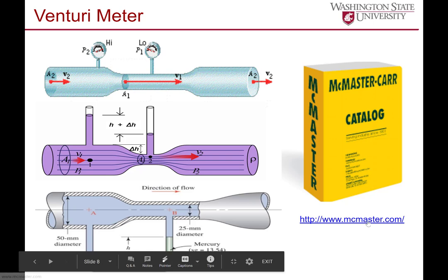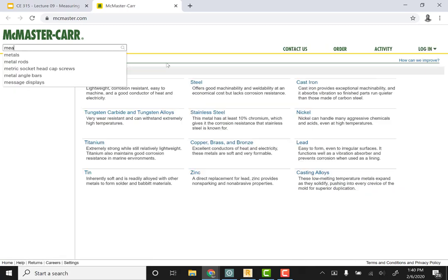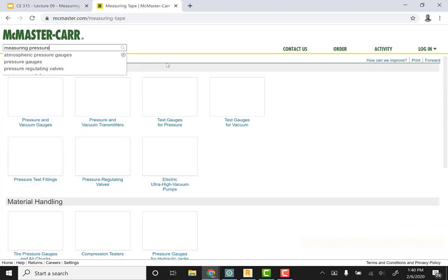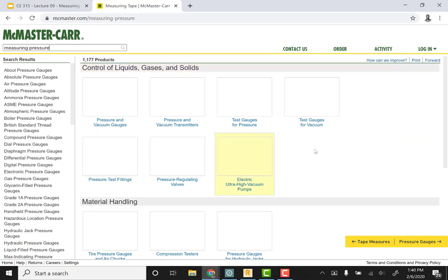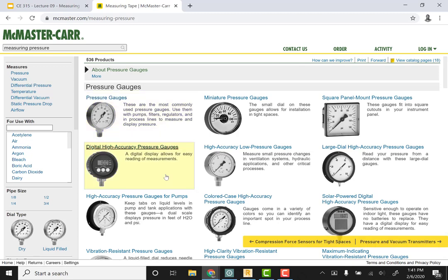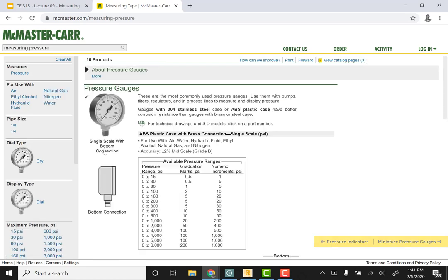Let's go to McMaster and see what kind of devices they have for measuring pressure. We have different types of gauges: pressure and vacuum gauges, pressure and vacuum transmitters, test gauges for pressure. If we go into this first one, there's all sorts of pressure gauges. For the venturi tube we could just put a pressure gauge on here.